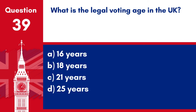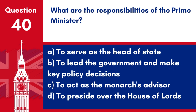Question 39. What is the legal voting age in the UK? A. 16 years. B. 18 years. C. 21 years. D. 25 years. Answer: B. 18 years. The legal voting age in the UK is 18 years.